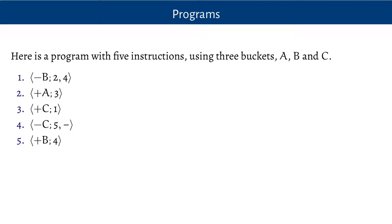Here's a program represented as a list of instructions. There are five instructions here, numbered one through five. Instruction one, which is always where the program will start, says: take a marble out of bucket B, and if you can do that, go on to instruction two; and if bucket B is already empty, then go on to instruction four. Instruction two says: add a marble to bucket A, and then go on to instruction three. Instruction three says: add a marble to bucket C, and then go back to instruction one.